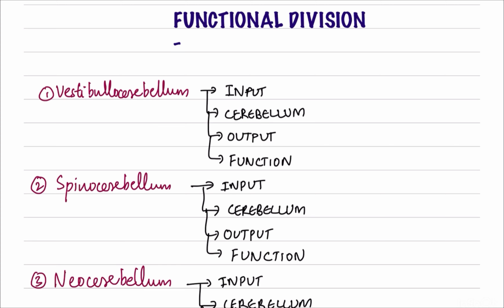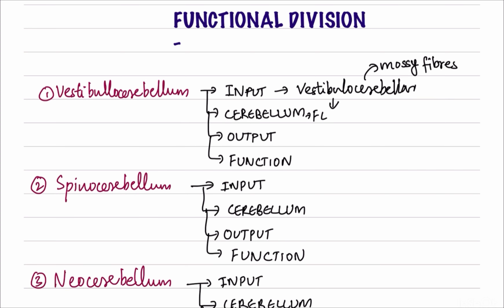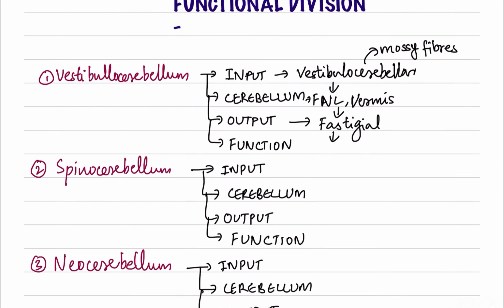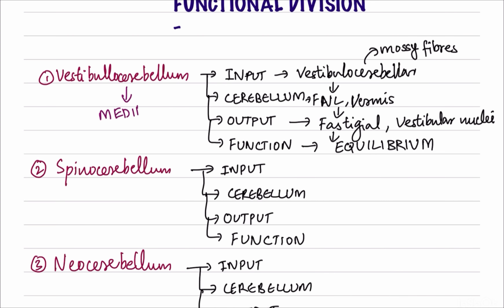Integrating neuroanatomy with the intrinsic circuit: for the vestibulocerebellum, input comes from vestibulocerebellar fibers, which are a type of mossy fiber. Inside the cerebellum they are associated with the flocculonodular lobe and the medial vermis. After processing through the internal circuit, the output is either through the fastigial nucleus (in the medial part of cerebellum) or directly to the vestibular nuclei via direct Purkinje cell connections. The function is maintenance of equilibrium. Most vestibular functions happen through the medial region of the cerebellum.